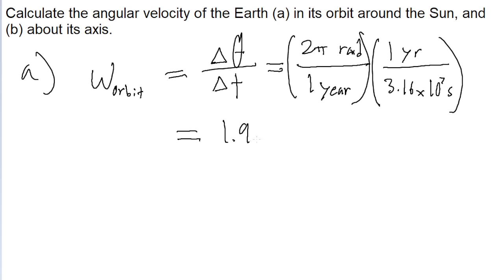And this is equal, if I put this into a calculator, to 1.99 × 10^-7 radians per second. So that's the answer to part A as the angular velocity of the Earth around the Sun.